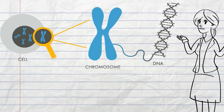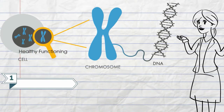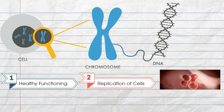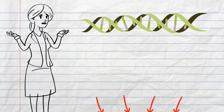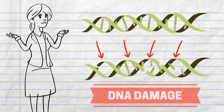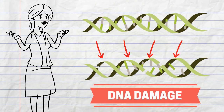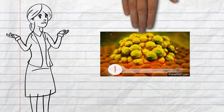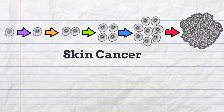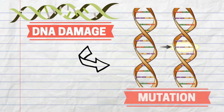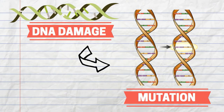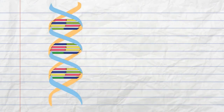DNA contains our genetic information and is responsible for the healthy functioning and replication of cells. Over time, the accumulated damage to the DNA can cause cells to replicate uncontrollably. This out-of-control replication can result in skin cancer. This occurs because the damaged DNA leads to mutations that cause the formation of dimers.